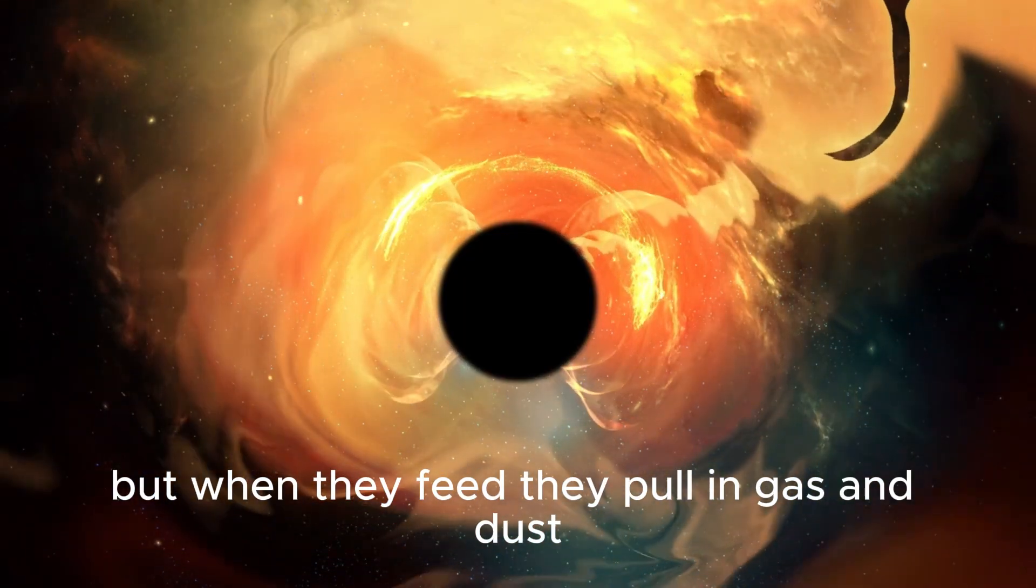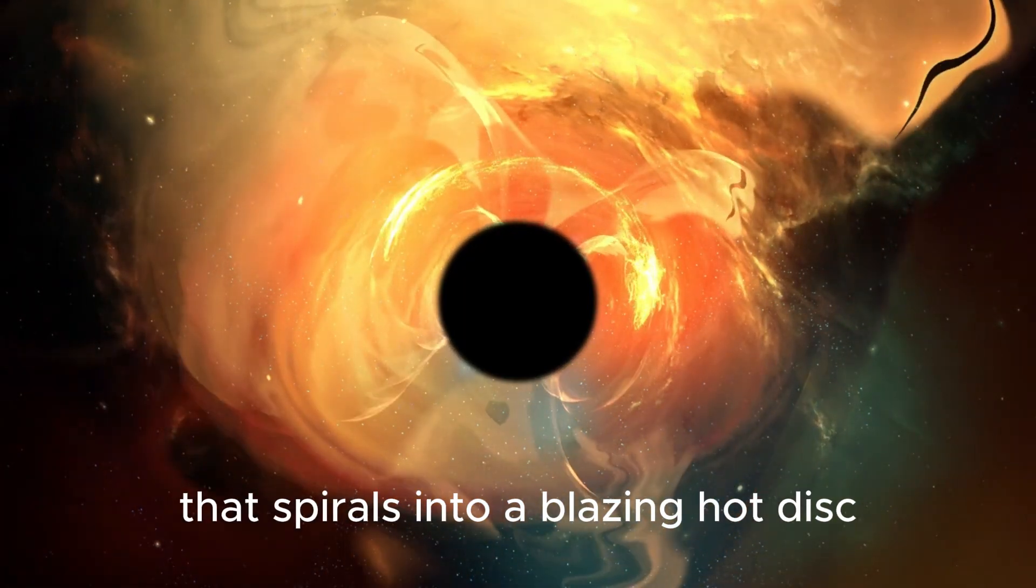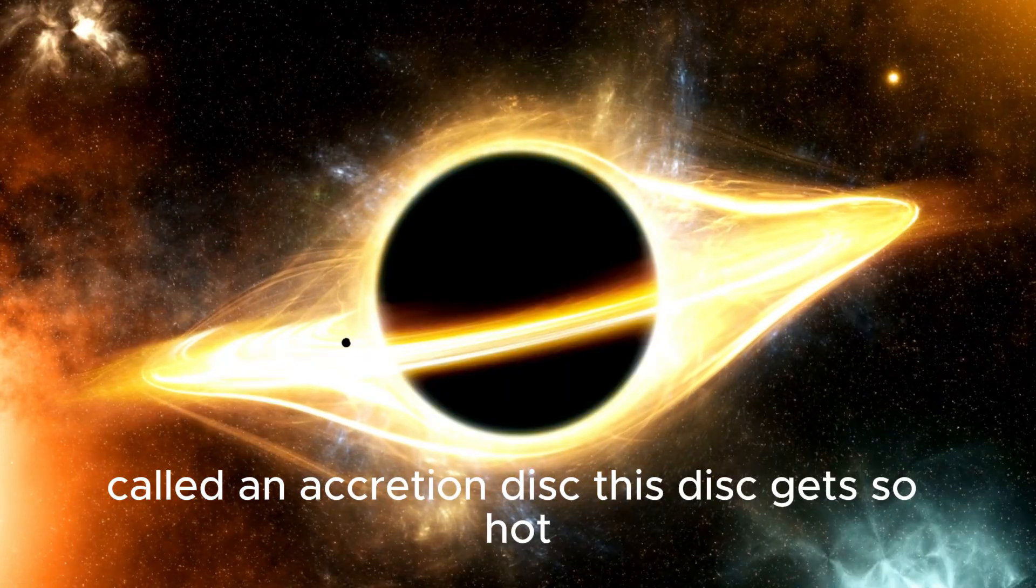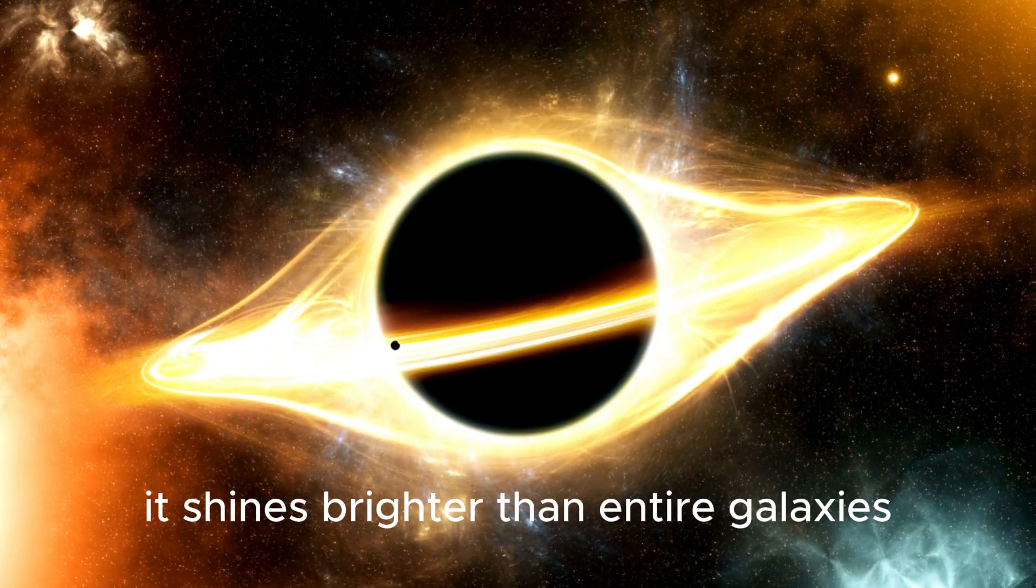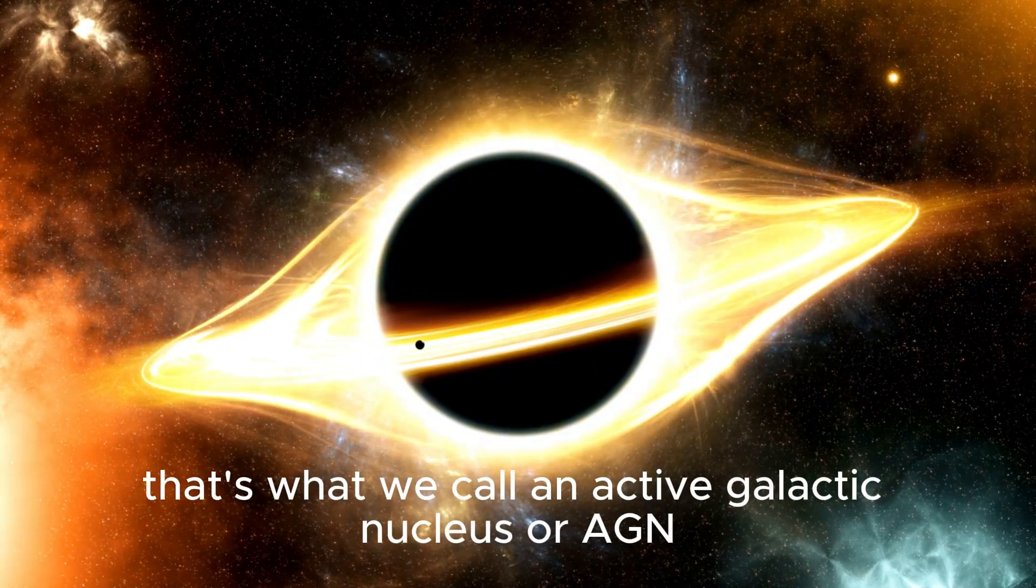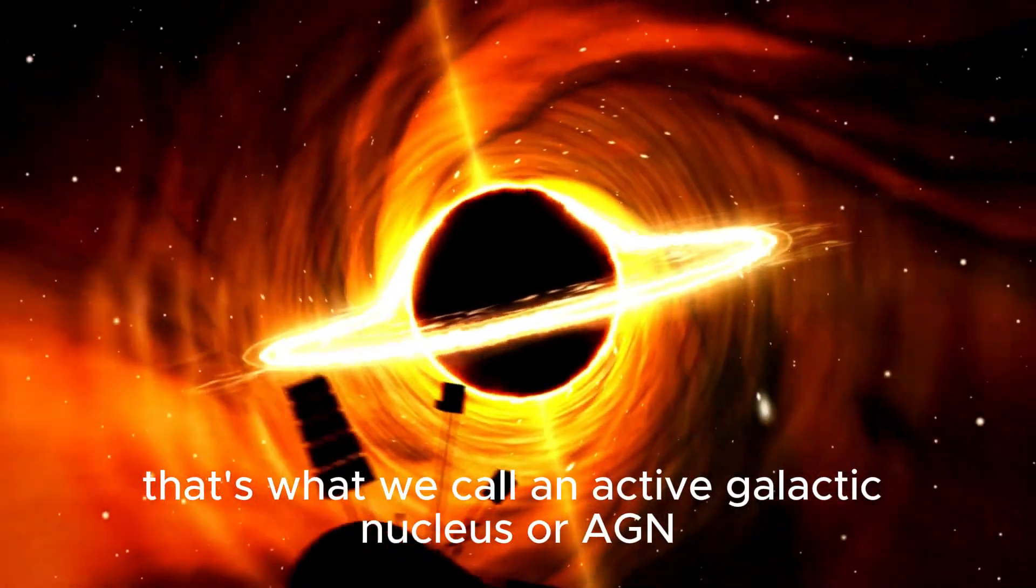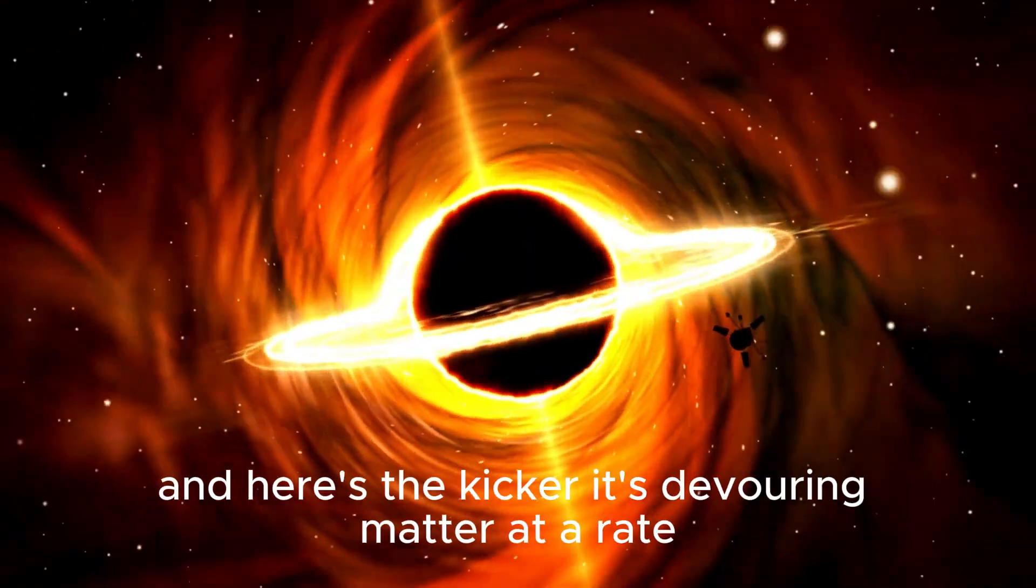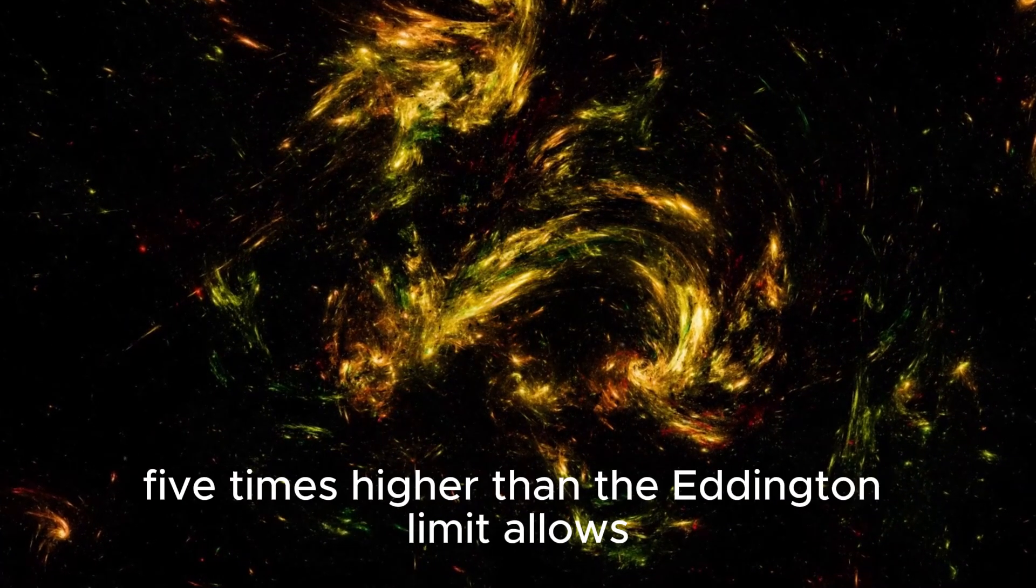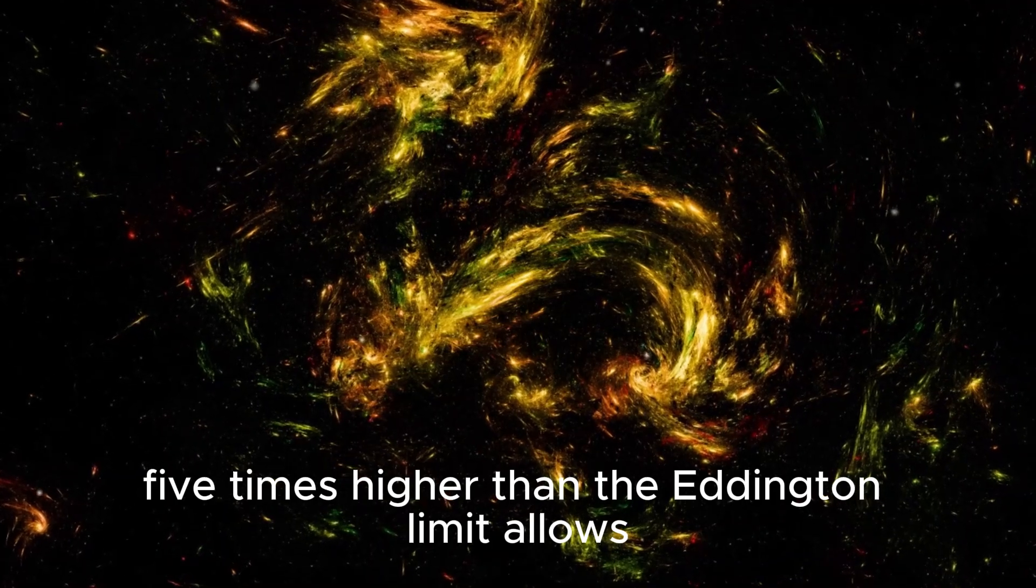But when they feed, they pull in gas and dust that spirals into a blazing hot disk called an accretion disk. This disk gets so hot it shines brighter than entire galaxies. That's what we call an active galactic nucleus or AGN. The AGN in GNZ-11 is screaming with light. And here's the kicker. It's devouring matter at a rate five times higher than the Eddington limit allows.